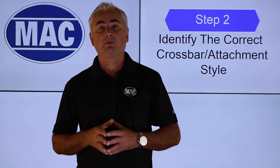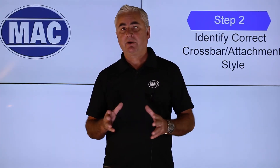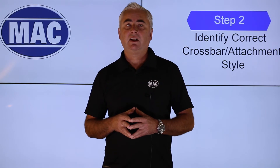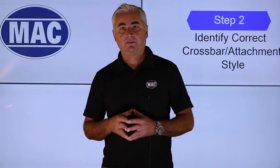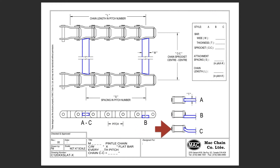Step number two: identify your cross bar style. There are three different styles of cross bars used, depending on your application. Style A — the cross bar is located in the center of the side bar, which allows weld on top and below the side bar. Style B is located flush with the bottom of the conveyor and flush with the bottom of the chain. Style C, which is the most common, is also located flush with the bottom of the conveyor but is formed on the ends, which allows you to get weld on top and below the cross bar.